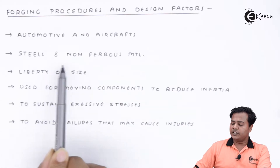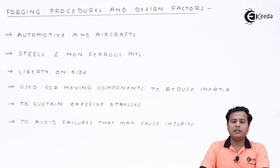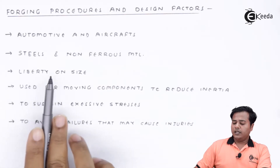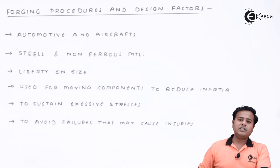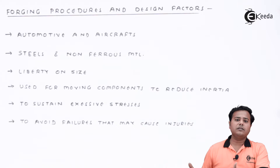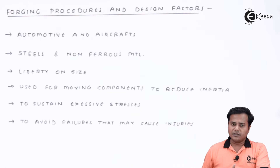The next point is steels and non-ferrous materials. Forging is generally applied on metals which are steels or non-ferrous materials. There is a liberty on size — you can forge a very small component or you can go for aircraft components also. So there is liberty in terms of size as far as forging is concerned.